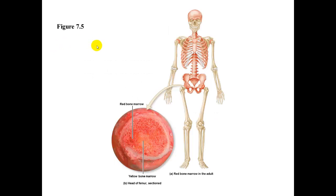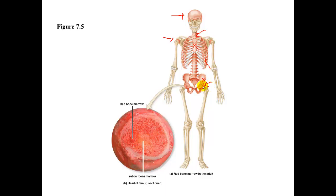Here's a figure showing the different areas of the adult body in which you can find red bone marrow. As mentioned, this includes the skull, the epiphysis of the humerus, most of the axial skeleton including the vertebrae, ribs, sternum, pelvis, and the epiphysis of the femur.